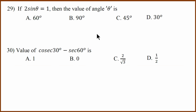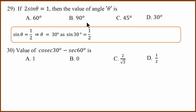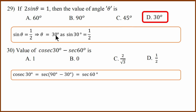Twenty-ninth question: 2 sin theta equals 1, which means sin theta equals half. If sin theta is half, theta equals 30 degrees, because sin 30 is half. Thirtieth question: this is a complementary angle question. Cosecant 30 equals secant (90 minus 30) which equals secant 60. So secant 60 minus secant 60 will be 0.